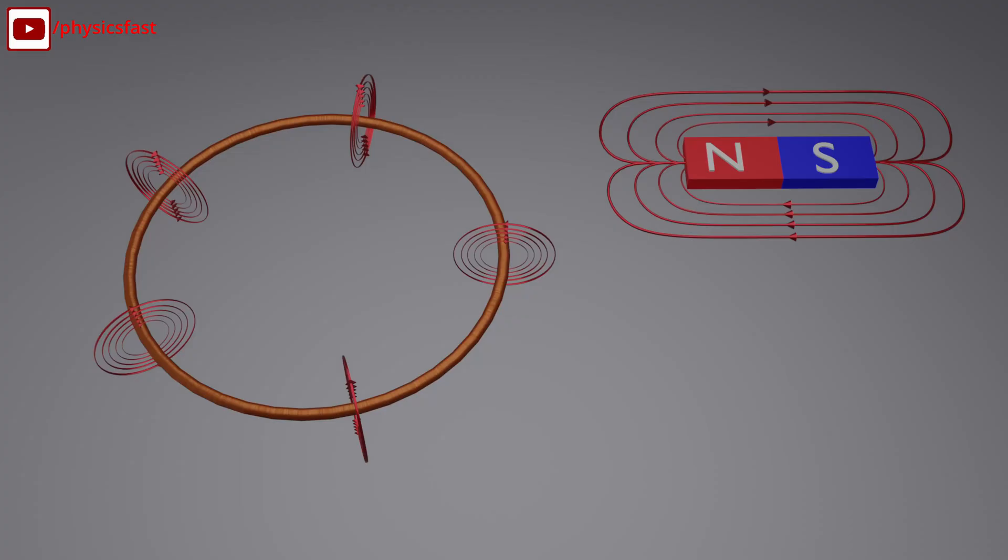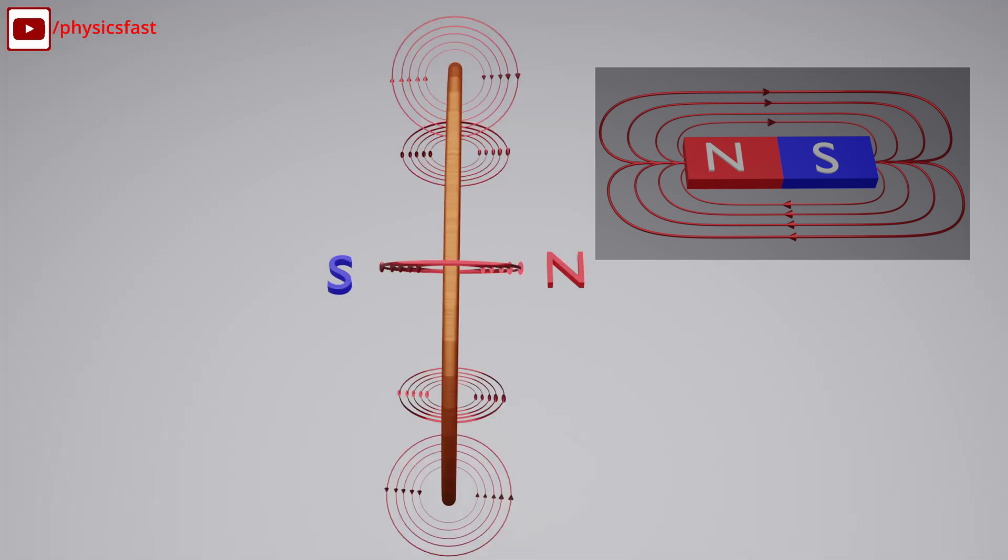When this copper wire is shaped like a coil, the magnetic field is created in this way, which is formed like a permanent magnet. Like a permanent magnet, south and north poles are formed.